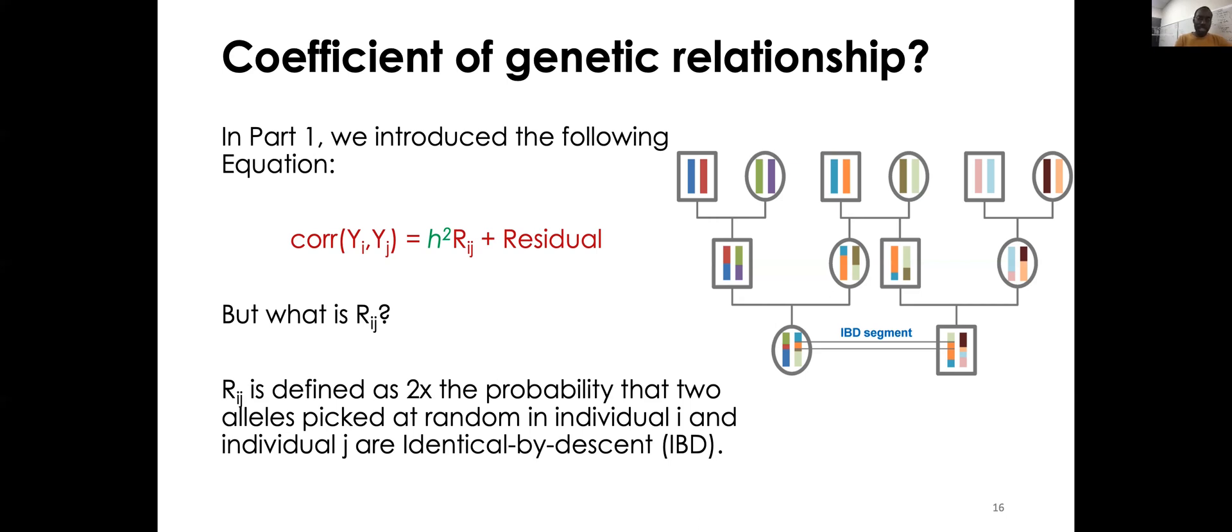So I'll come back to that challenge in a minute, but just wanted to emphasize that again, we have something which is instrumental here. It teaches us, it suggests a way that we could use that information to estimate heritability, but it just highlighted this challenge around quantifying this R_IJ.